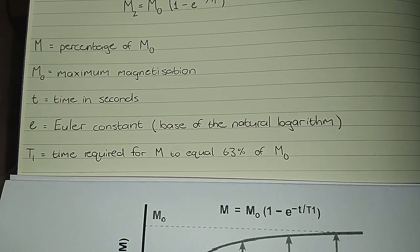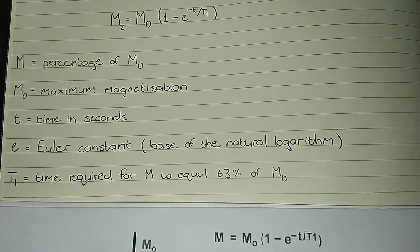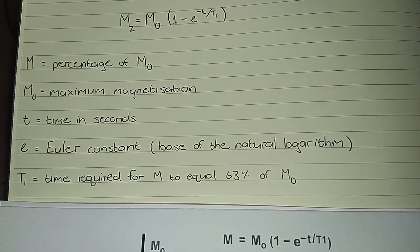And T1 is by definition, even given in the question, just the time required for M to equal 63 percent of M naught.